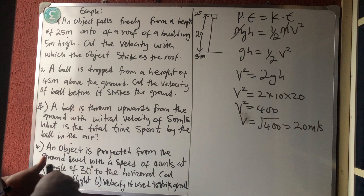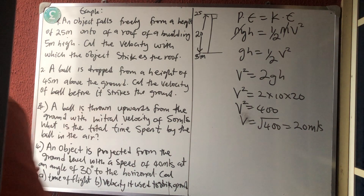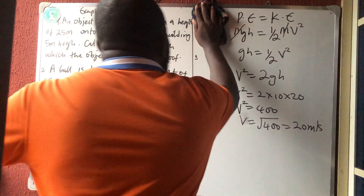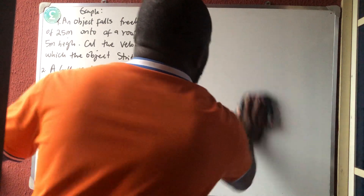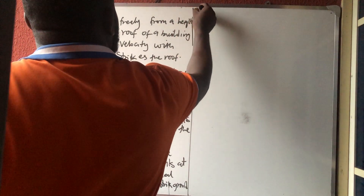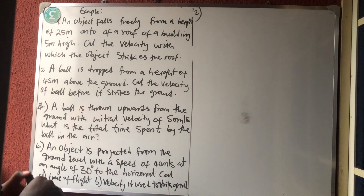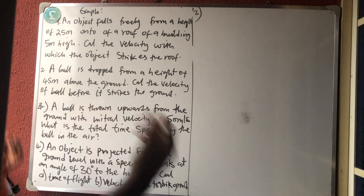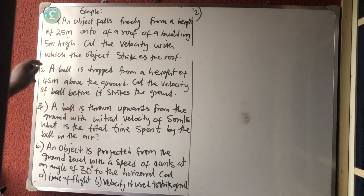So you see, any method you like — I've used 3 methods and got the same answer. That is for number 1. Let's move to number 2 quickly. Number 2 says a ball is dropped from a height — same question, calculate the velocity. Solve number 2 because they are the same thing.